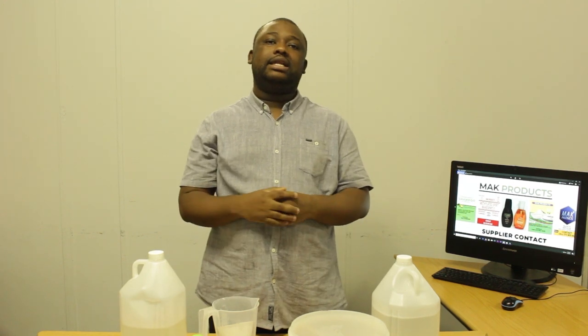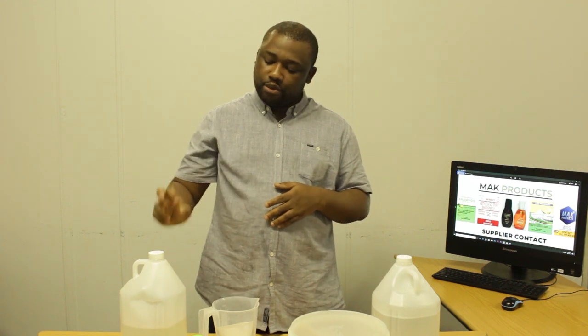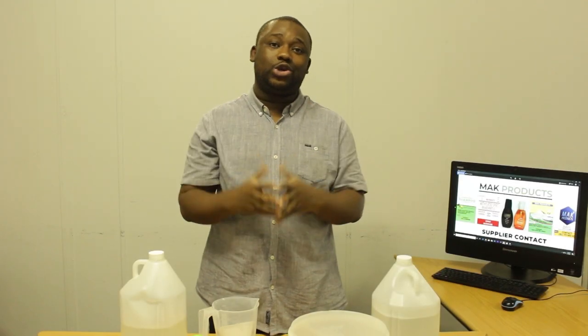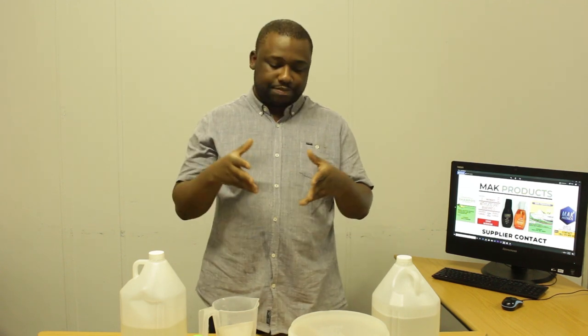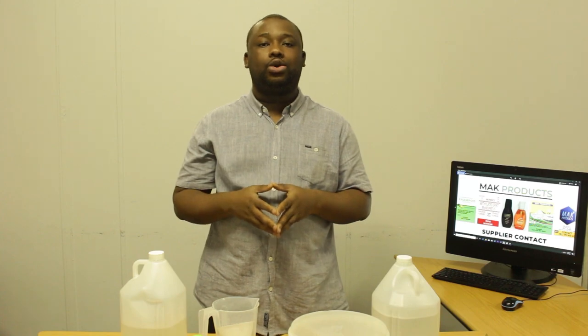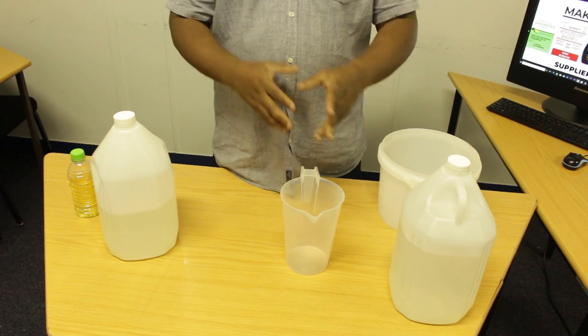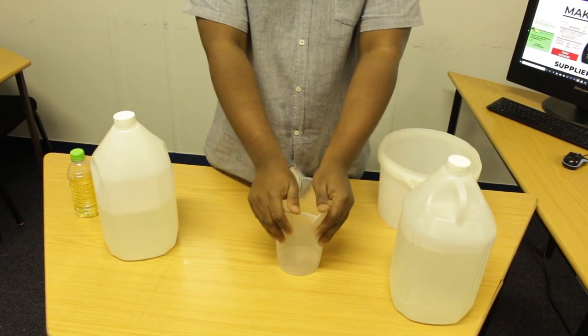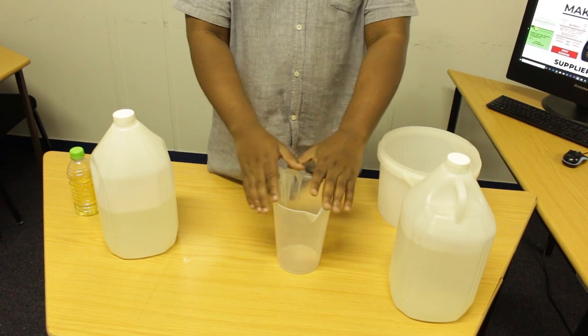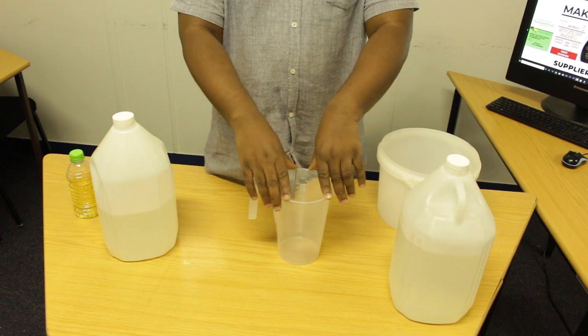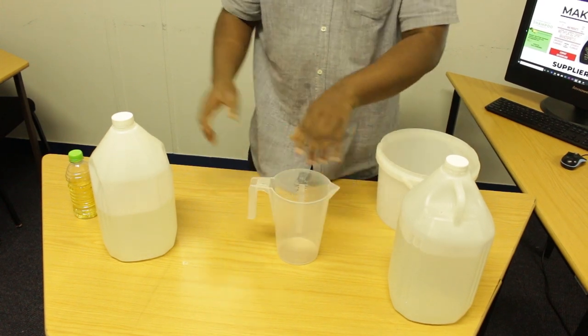So NP9 is also an emulsifying agent — it can be used as an emulsifier. Here on close camera, before going further, I'm pouring NP9 into this container so some of us can see its appearance, thickening properties, and viscosity. Here we go.